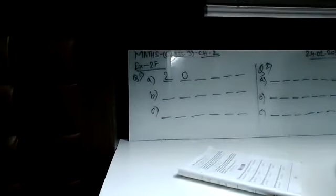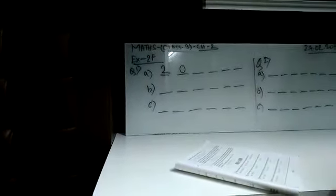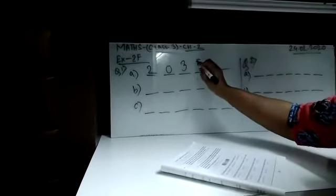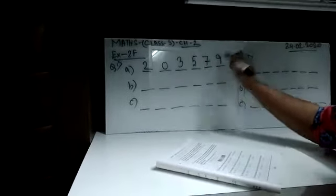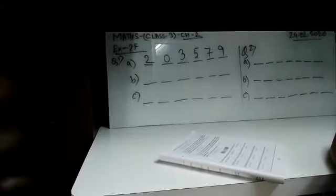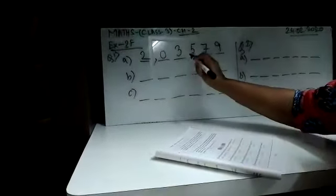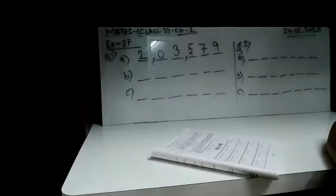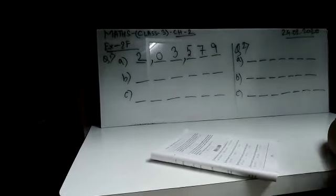This 2 we need to put in the first place. Now what are the remaining digits? 3, 7, 5, 9. So the next smallest digit is 3, then 5, then 7, then 9. So the smallest 6-digit number formed is 203579. I think the sum is clear to all. Let's see the same thing for the next question.